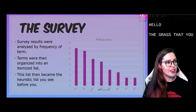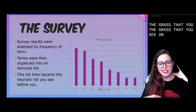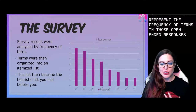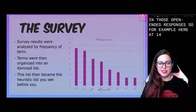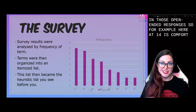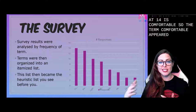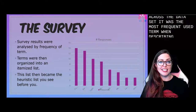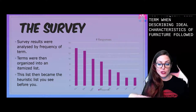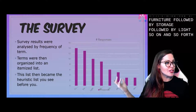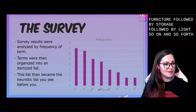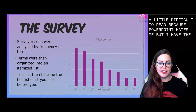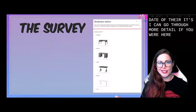The graph on this slide represents the frequency of terms in those open-ended responses. For example, here at 14 is 'comfortable.' The term comfortable appeared 14 times across the data set — it was the most frequently used term when describing ideal characteristics of furniture, followed by storage, followed by light, so on and so forth. The graph is a little difficult to read because PowerPoint hates me, but I can go through more detail if you are curious in the Q&A.